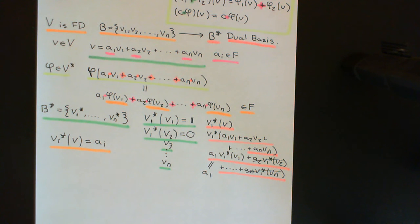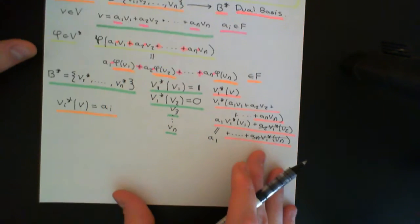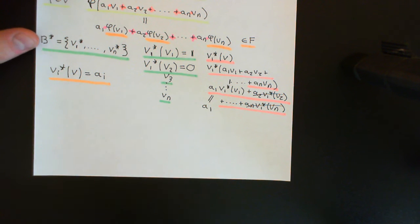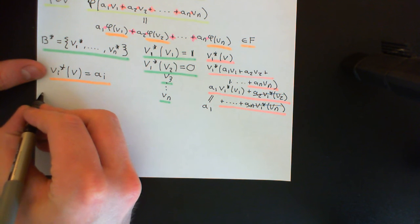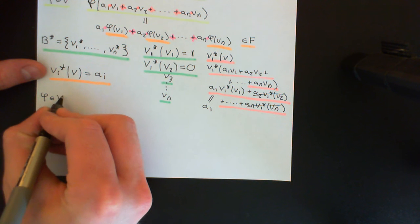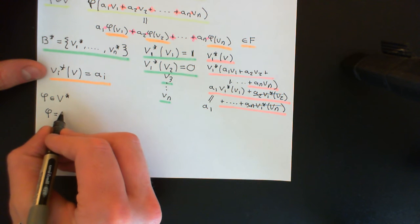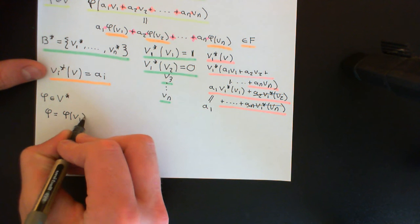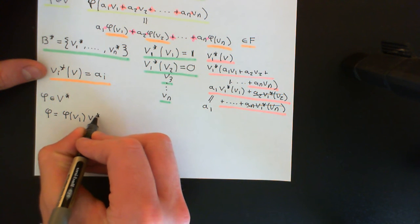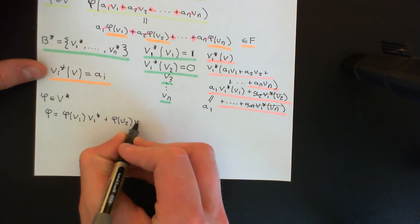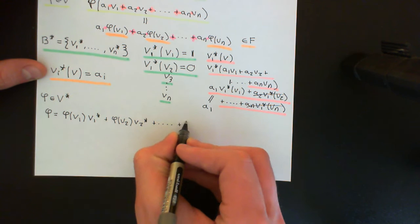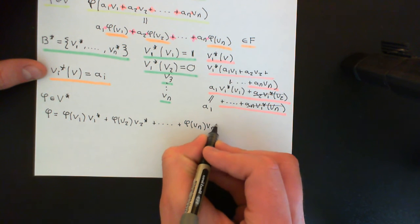That is the dual basis for the dual vector space. What I now want to see is how we can write all other co-vectors of the dual vector space as linear combinations of these dual basis vectors. My claim is that if phi is an element of V star, then phi can be written as phi(V1) times V1 star plus phi(V2) times V2 star, all the way up to phi(Vn) times Vn star.